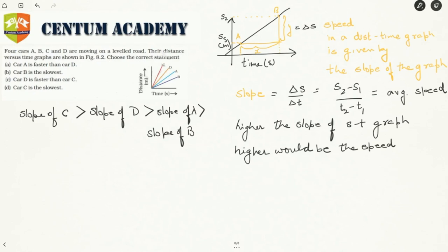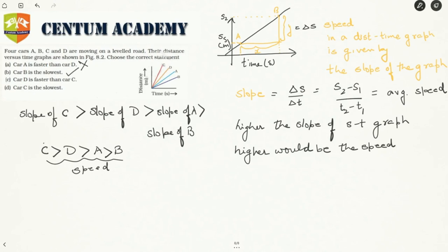So the speeds of all four cars are in the order C greater than D greater than A greater than B. Car B is the slowest, car D is faster than A, and car C is moving at the fastest speed — so answer B is correct.